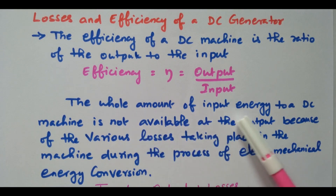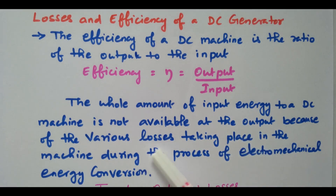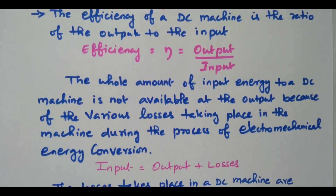The whole amount of input energy to the DC machine is not available at the output, because various losses take place in the machine during the process of electromechanical energy conversion. The input given is not exactly available at the output; in between, some losses will occur. So we can write: input equals output plus losses.